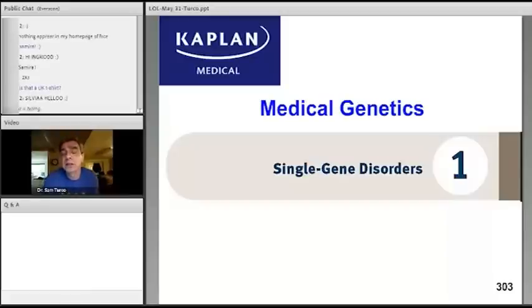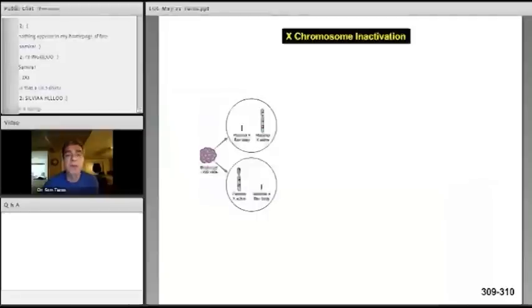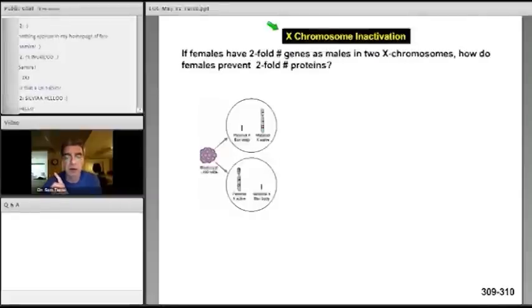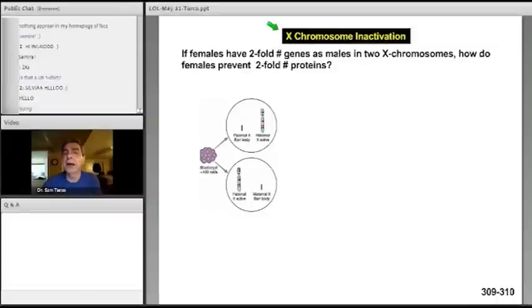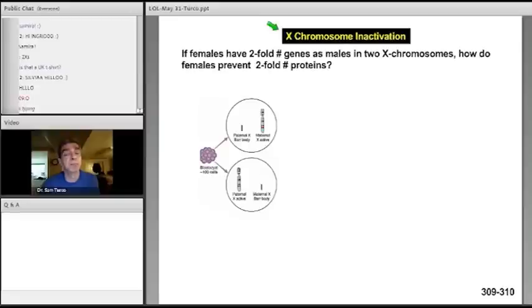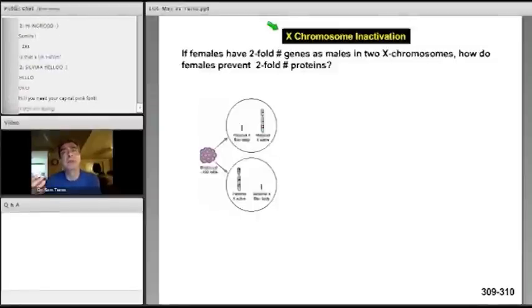Before we talk about X-linked dominant, we're going to talk about the X chromosome in females. We're going to talk about X chromosome inactivation. Now, the biochemical concept is if females have two X chromosomes in a cell compared to males, yet females do not have twice the number of enzymes or proteins coming from the X chromosomes compared to males. So why is that? Why don't they have twice the number of proteins or enzymes encoded by the genes on the two X chromosomes?